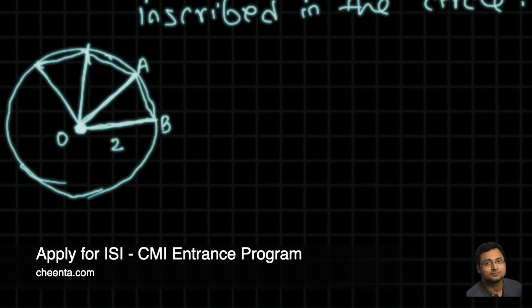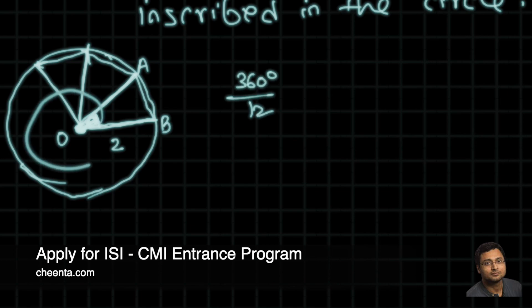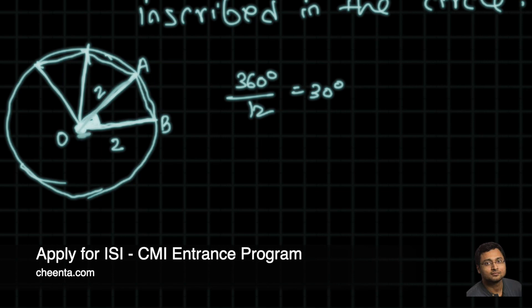The angle at this center is 360° divided by 12, because this entire angle is divided into 12 pieces. So it's 360° by 12, that's 30°. The two sides are 2 and 2 of this particular triangle because both of them are radii, and the included angle is 30°.